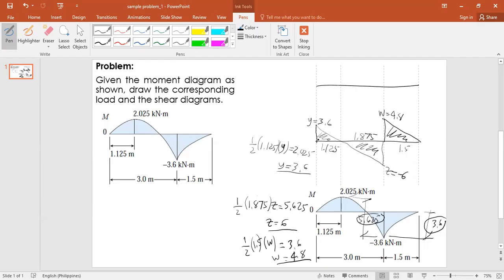So the moment is second degree and positive. Mirror it and it's correct. Let's denote this value as w. What is w? Since 1.5, the area is equal to 3.6. So compute for w: one half of 1.5 times w is equal to 3.6.